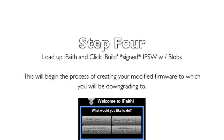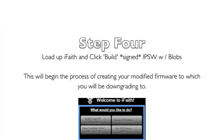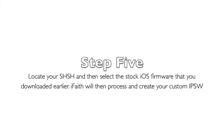Step 4 is to load up iFaith and click 'Build Stitched IPSW w/ Blobs'. This will begin the process of creating your modified firmware to which you'll be downgrading. Step 5 is to locate your SHSH and then select the stock iOS firmware that you downloaded earlier. iFaith will then process this and create your custom IPSW firmware for your restore.